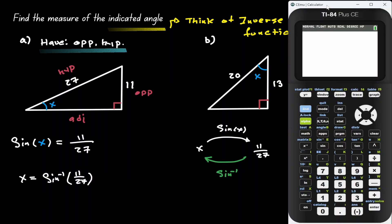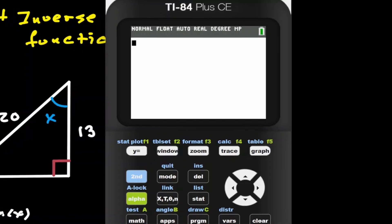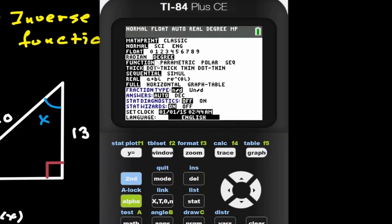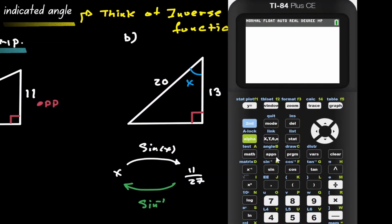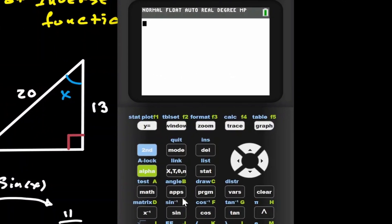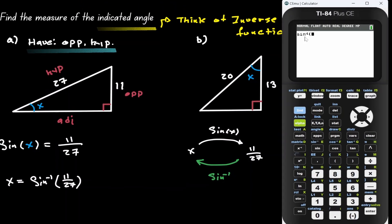Let's get our calculator. First, let's make sure our calculator is in degree mode — press mode and notice it's set to degree, so we can continue. To find the inverse of sine button, it's located above the sine button in blue. To access it, press second and then sine. Notice there's a little negative one on top of it, so we know we're okay. Let's plug in our ratio 11 over 27, and now we have our angle: 24.04 degrees.